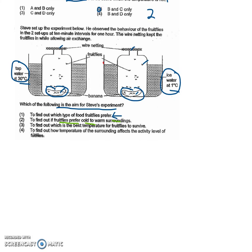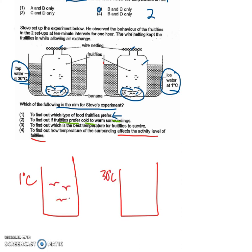This one is to find out how temperature of the surrounding affects the activity level of the fruit flies. You have one jar and one jar. This jar is at one degree Celsius, this jar is at 30 degrees Celsius, and there are some fruit flies here.